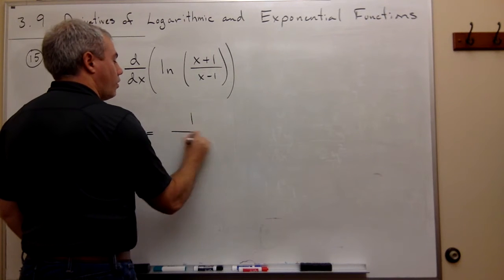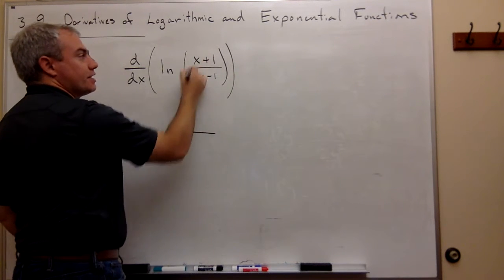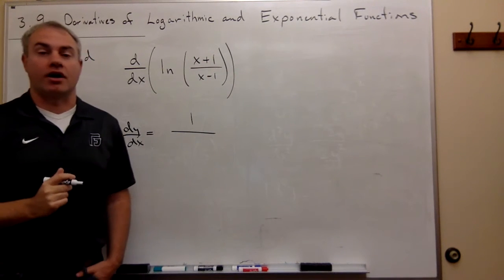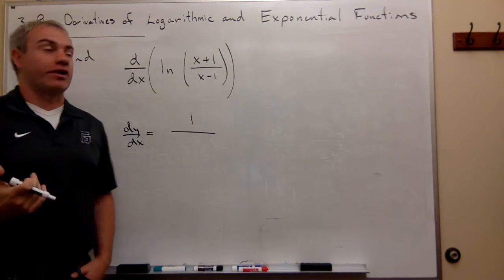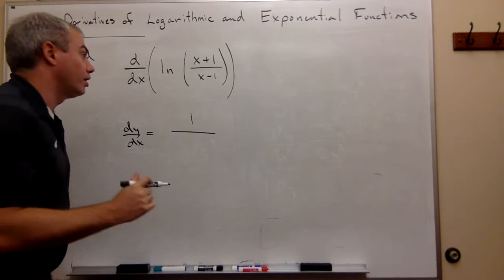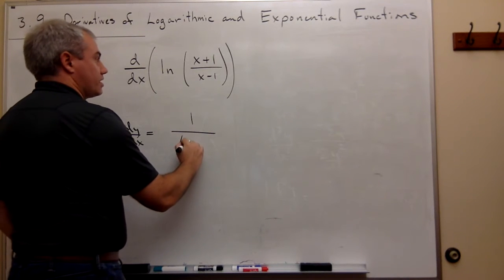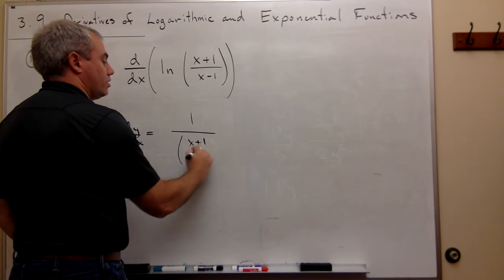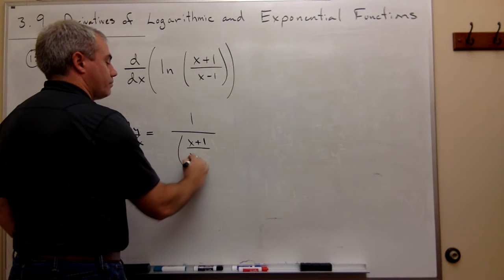So it's 1 over whatever it is that's inside of your natural log. Anytime you're taking the derivative of ln of something, you're going to start with 1 over that thing. So in this case, that's (x+1)/(x-1).